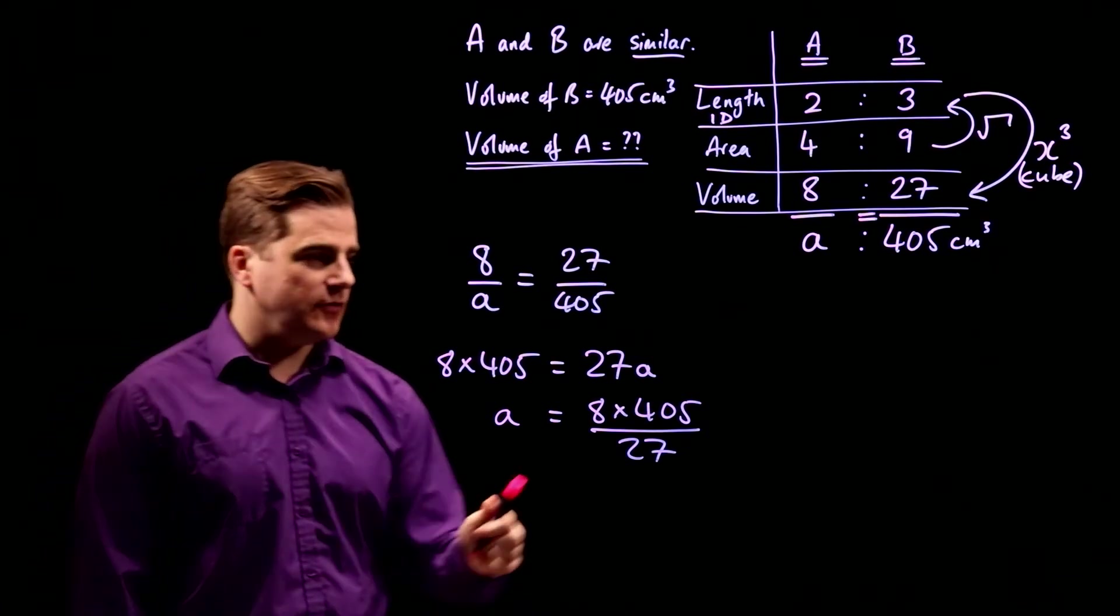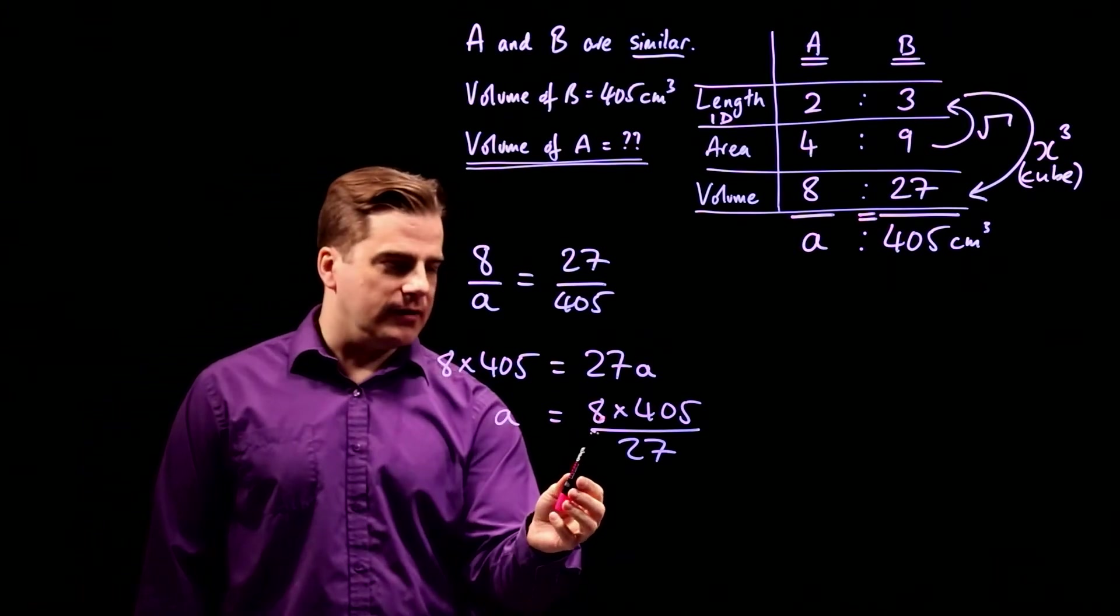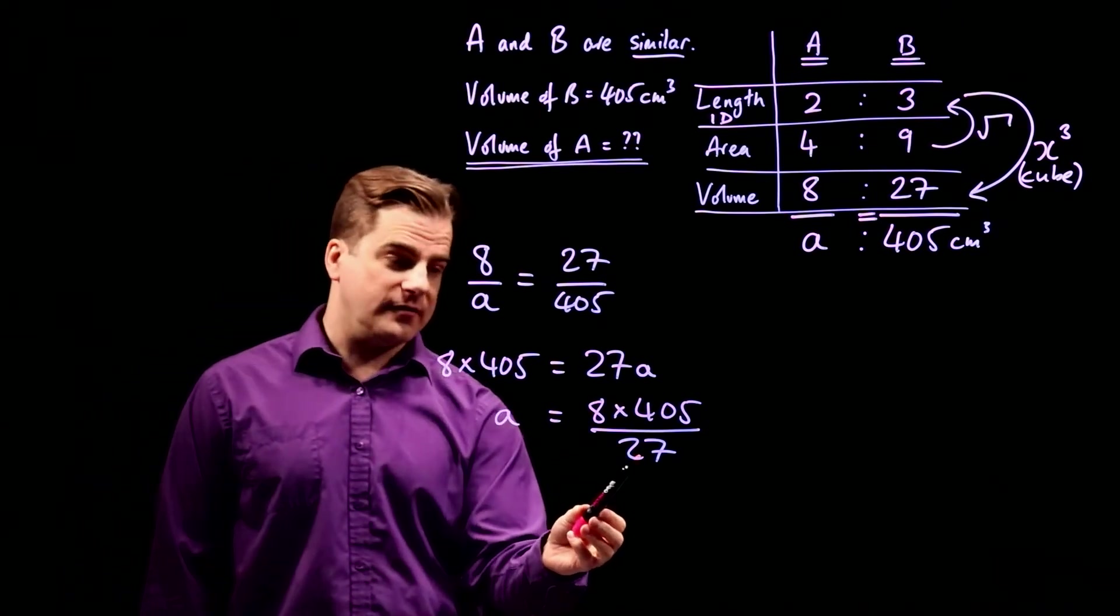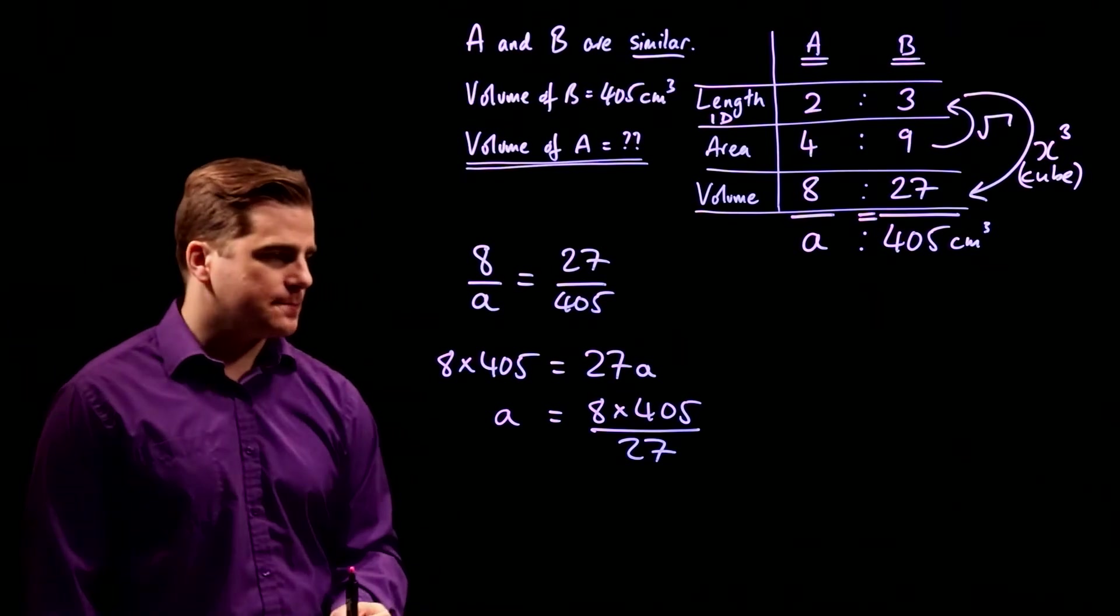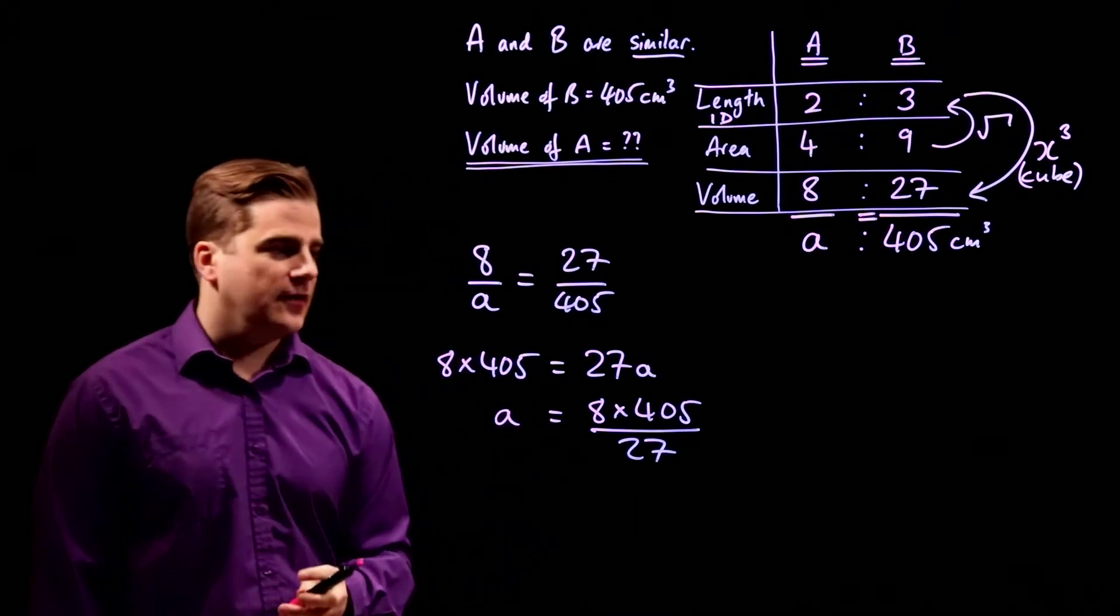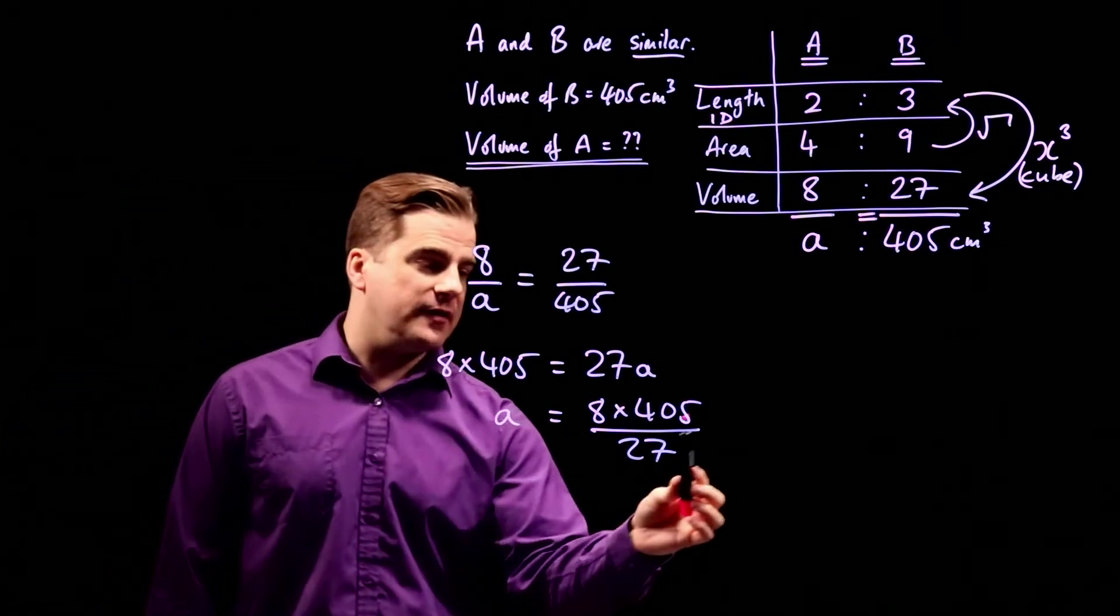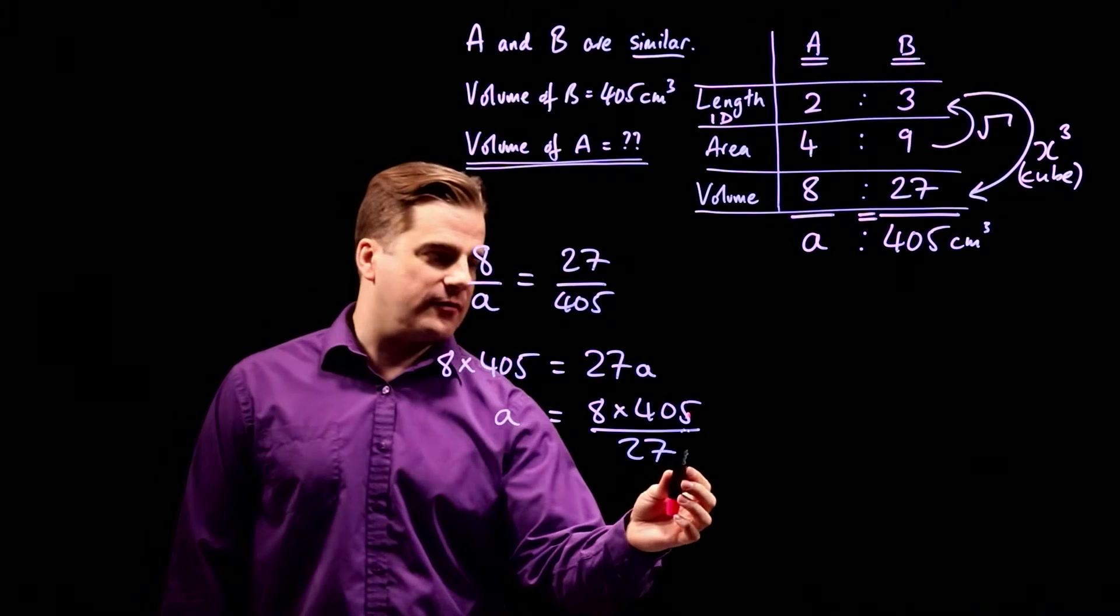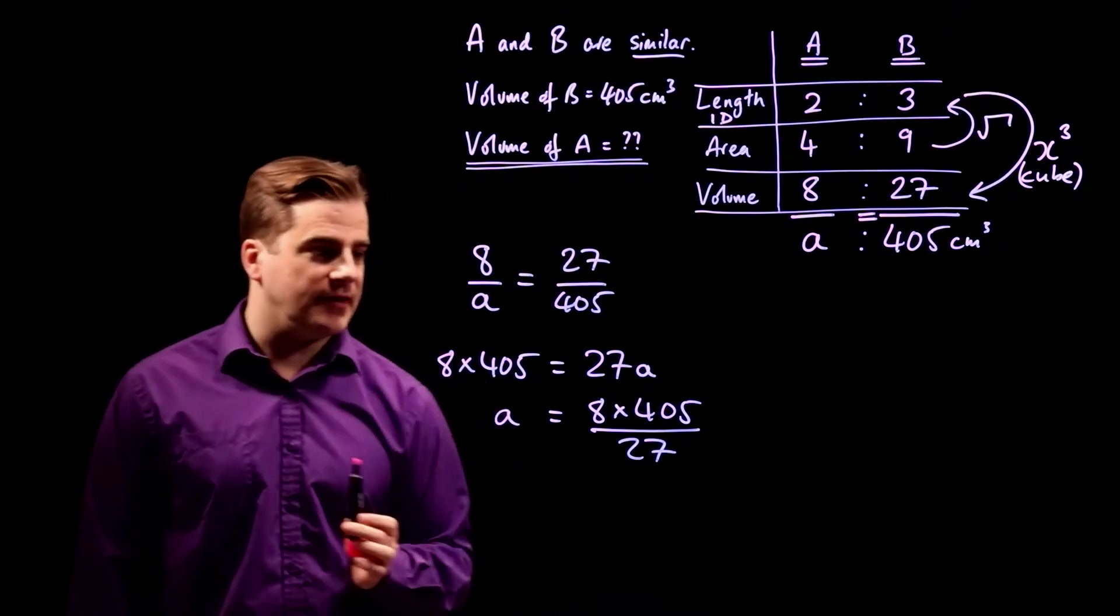Right. How are we going to do this? This is a non-calc paper. We have to do it in our heads. Right. Well, 8, 3 doesn't go into 8, 3 goes into 27, 2 doesn't go into 27, it does go into 8, so that's not very convenient. Let's look at 27 and 405. We know that 3 goes into 27. It's three nines. Does three go into 405? There's a little trick you can use to work out if a number is divisible by 3. Just add up all the digits, and if that number is divisible by 3, then the original number is divisible by 3. 4 plus 0 plus 5 is 9. Therefore 405 is divisible by 3. So let's divide 405 and 27 by 3.